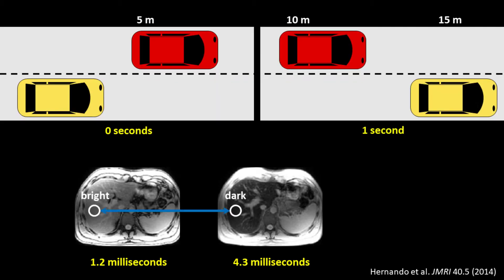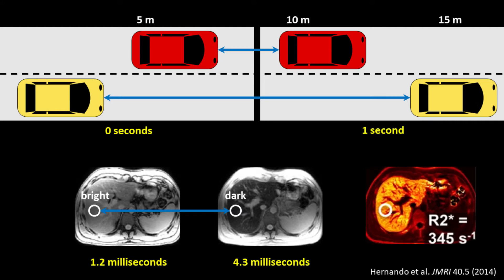Moreover, the pixel intensities in these images are changing, similarly to how the positions of the cars changed between pictures. We can calculate the speed of this change, or R2 star, for all pixels. This is called R2 star mapping.